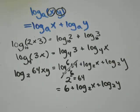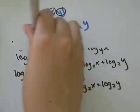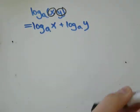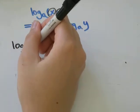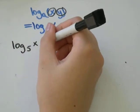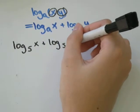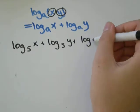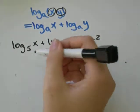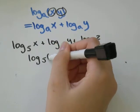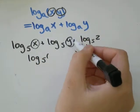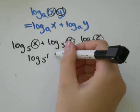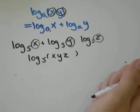Sometimes you'll have to go the other way. You'll see a log that's all split up and the question will say write it as a single logarithm. So let's say you had log base five of x plus log base five of y plus log base five of z. All you need to do is write down log of the same base and multiply x times y times z. So that would just be log xyz.